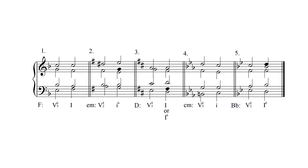In the key of E minor, the root of the dominant seventh chord is the B in the tenor voice, so the chordal seventh is the A in the bass voice — resolve that pitch first, down by step to G. The leading tone is the D sharp; remember to raise those leading tones in minor keys. That D sharp resolves up by step to E.